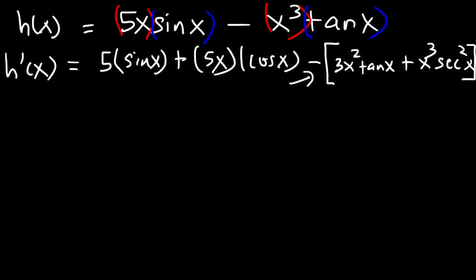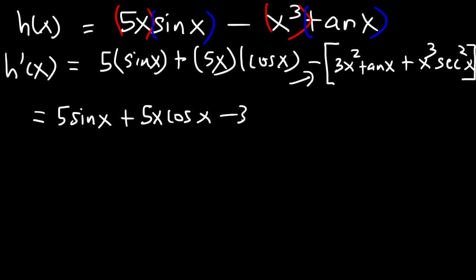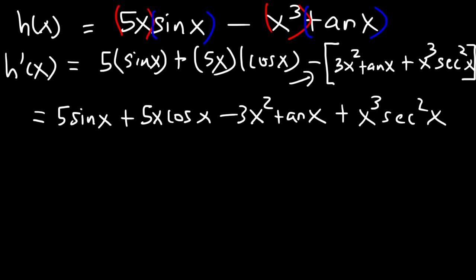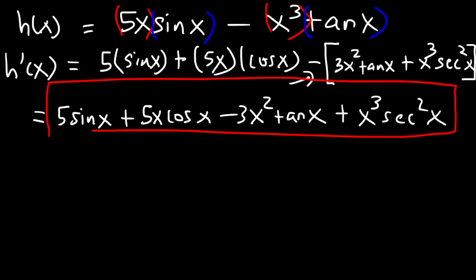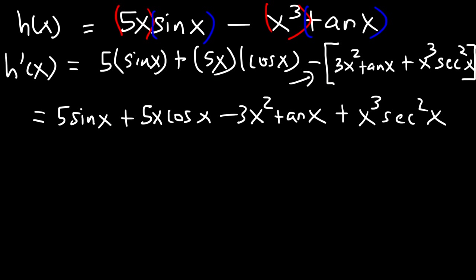Don't forget to distribute the negative sign to everything. So we have 5 sine x plus 5x cosine x minus 3x squared tangent x minus x cubed secant squared. There's nothing else that we can do with this problem, so we're going to leave it the way it is. This should be a negative sign — we need to distribute that negative. So this is the answer.